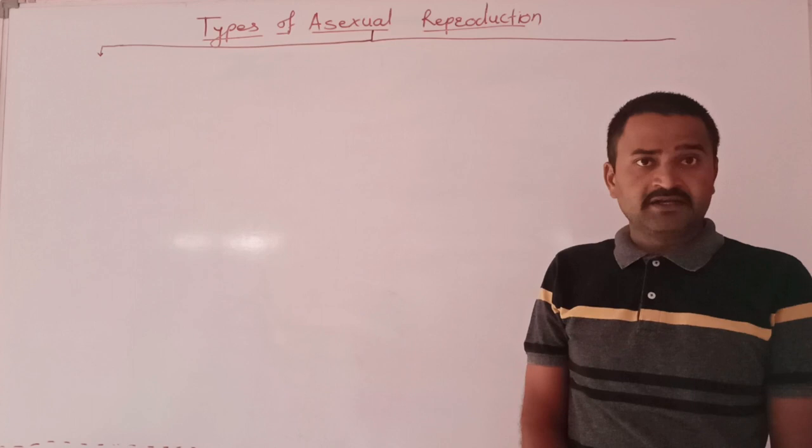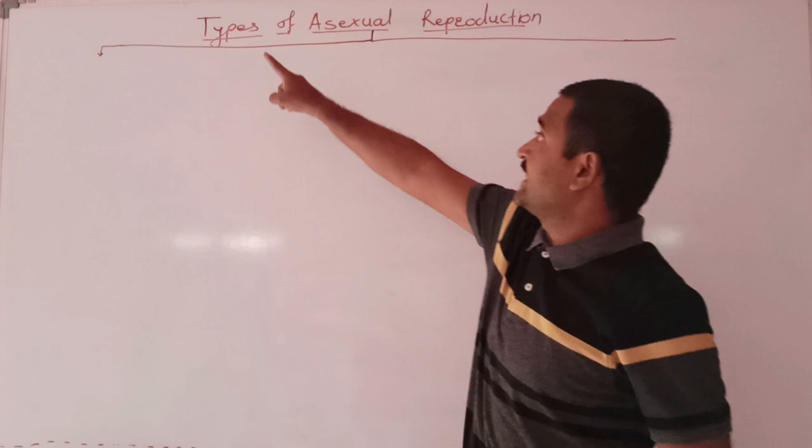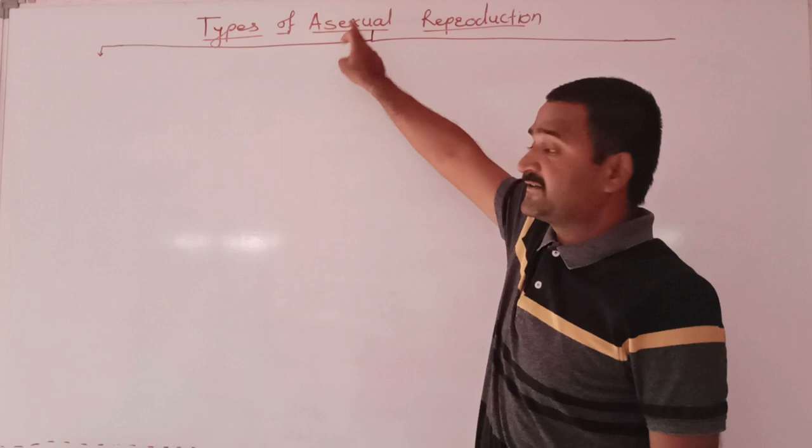In last lecture, we have studied about reproduction and its two main types, those are asexual reproduction and sexual reproduction. In today's lecture, I am going to teach about the types or methods of asexual reproduction.